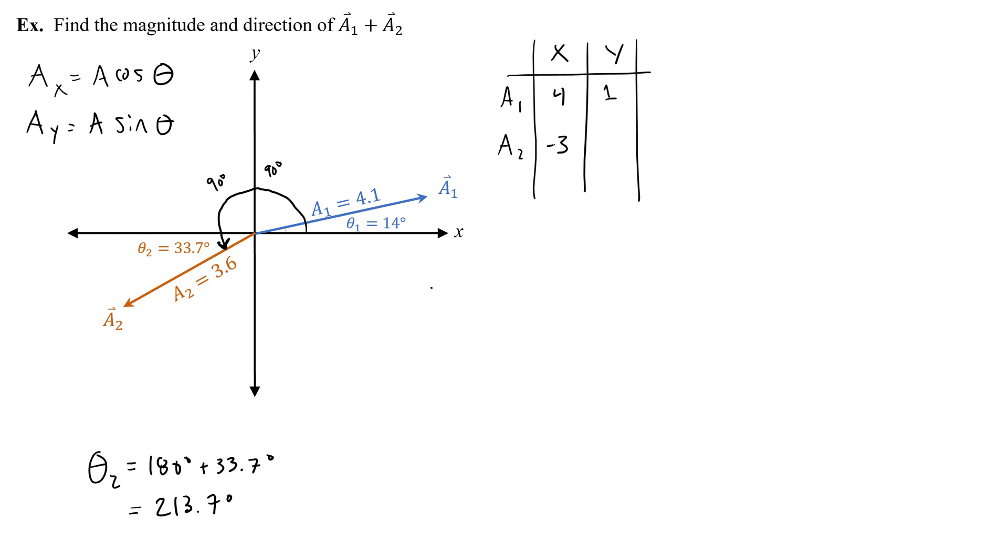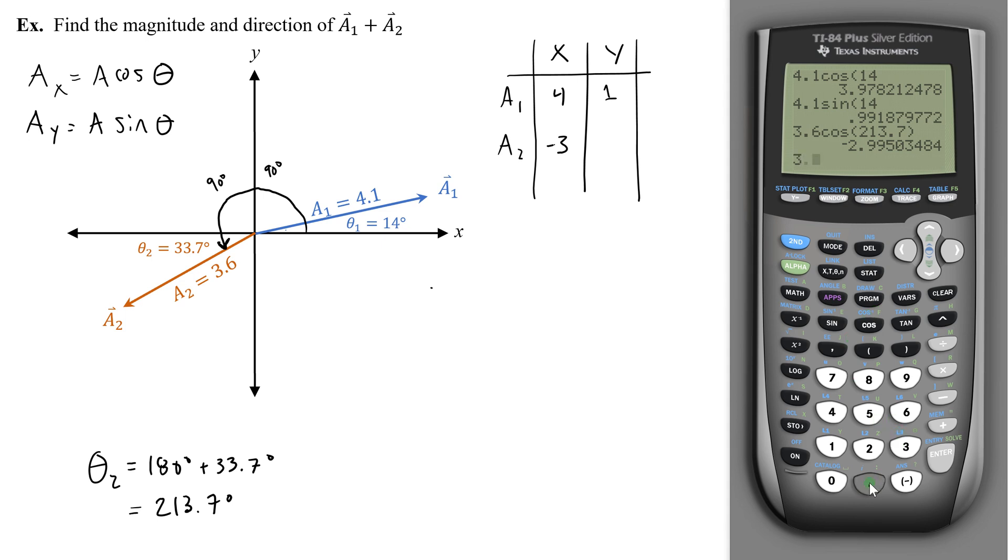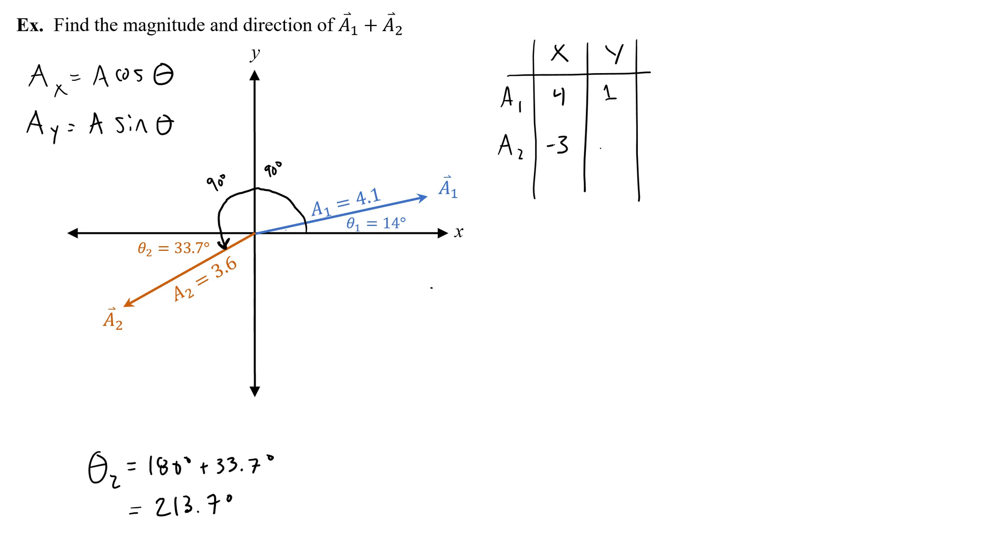Then the y component is going to be 3.6 sine of 213.7, which again should give me a negative because this vector points down and I should expect a negative y component. Boom, negative y component. So negative 1.99, or basically negative 2. So we'll store that here, negative 2, as our y component.